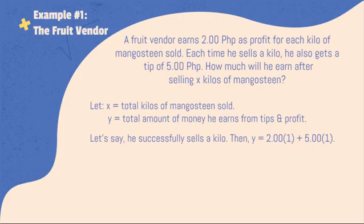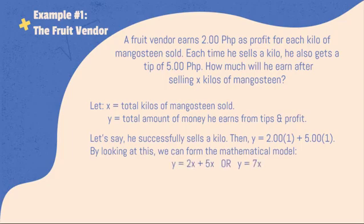Say, he successfully sells a kilo of mangosteen. Then Y is equal to 2 pesos times 1 kilo plus 5 pesos times 1 kilo. By looking at this, we can form a mathematical model: Y is equal to 2X plus 5X. If we are to simplify this equation, it will be Y is equal to 7X.